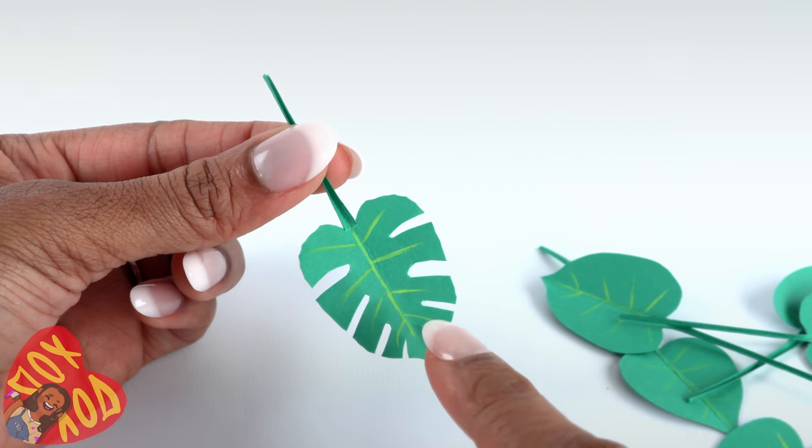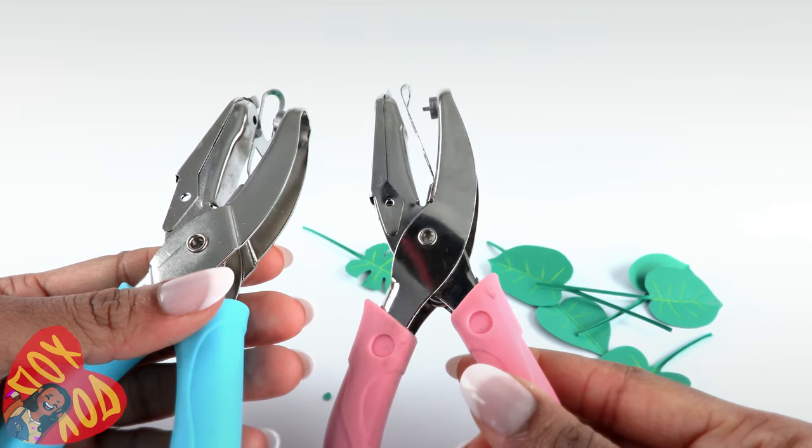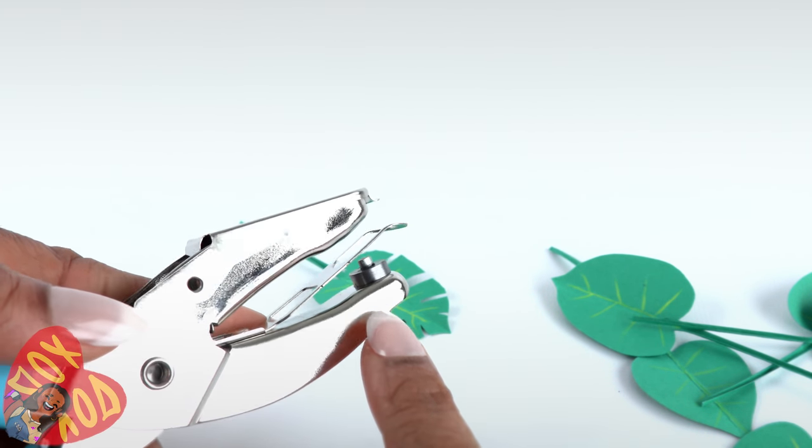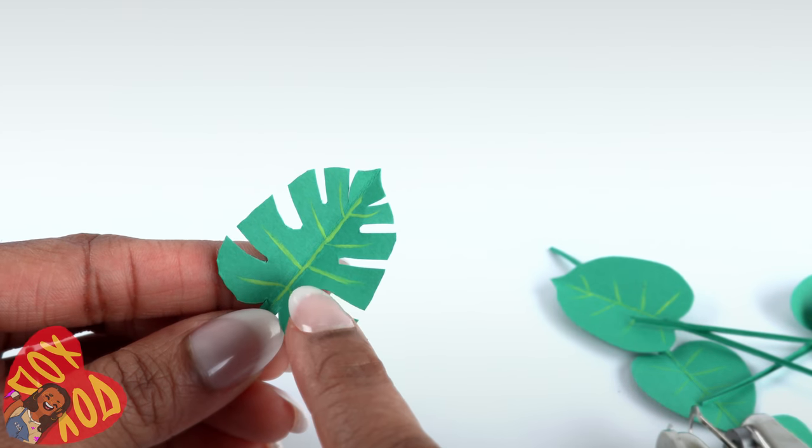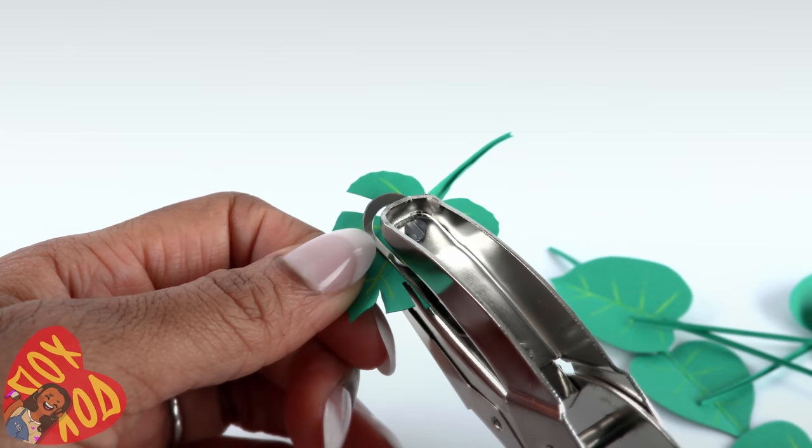I've got two hole punches here. They are different sizes. This one is really tiny. This one is slightly larger, but it's still smaller than the ones you would use for school. I'm going to punch holes at the end of my notches, but only if space allows.